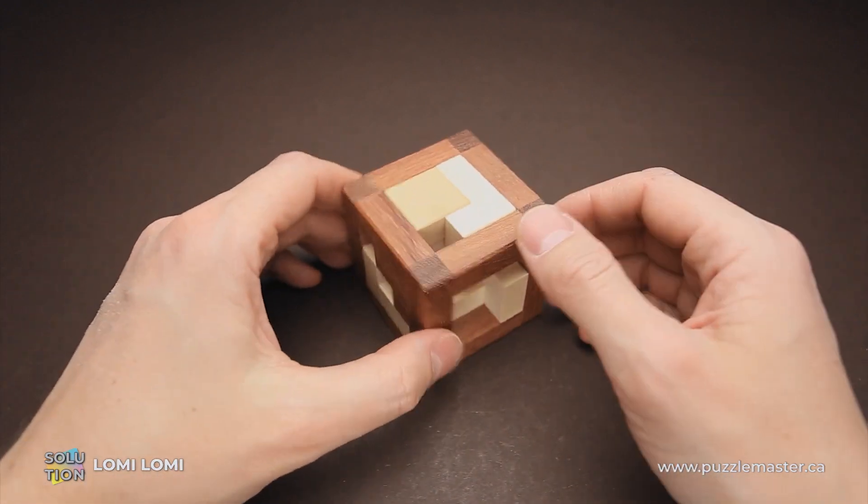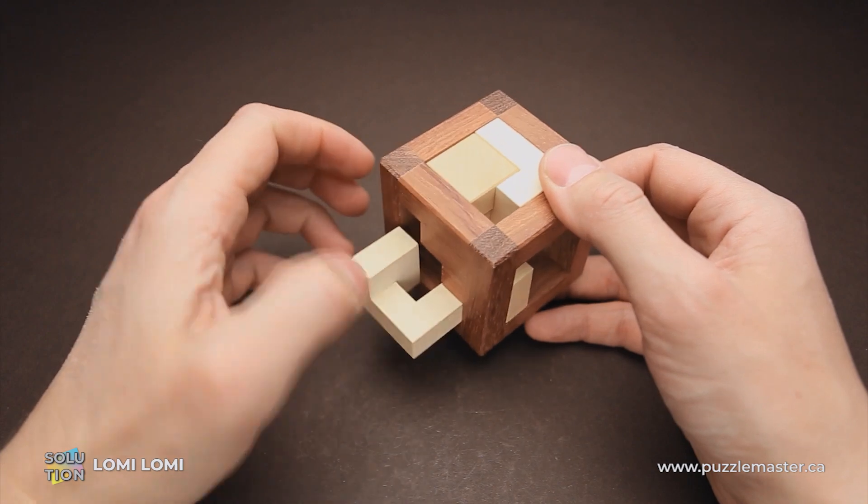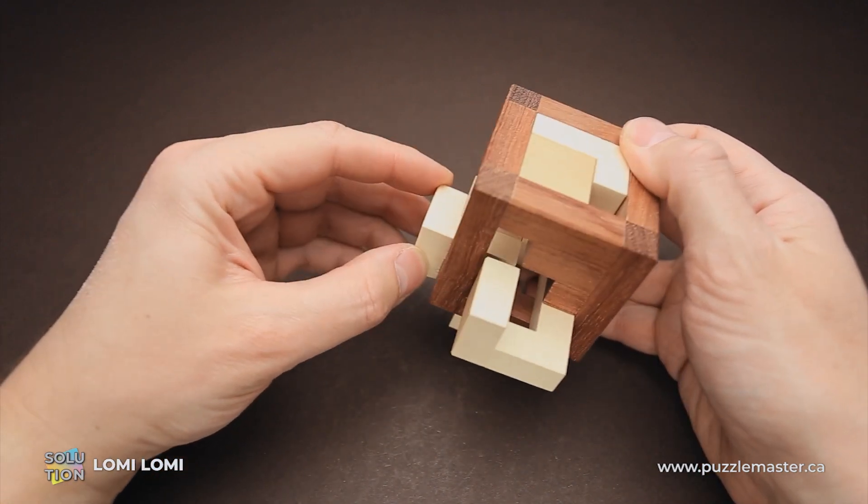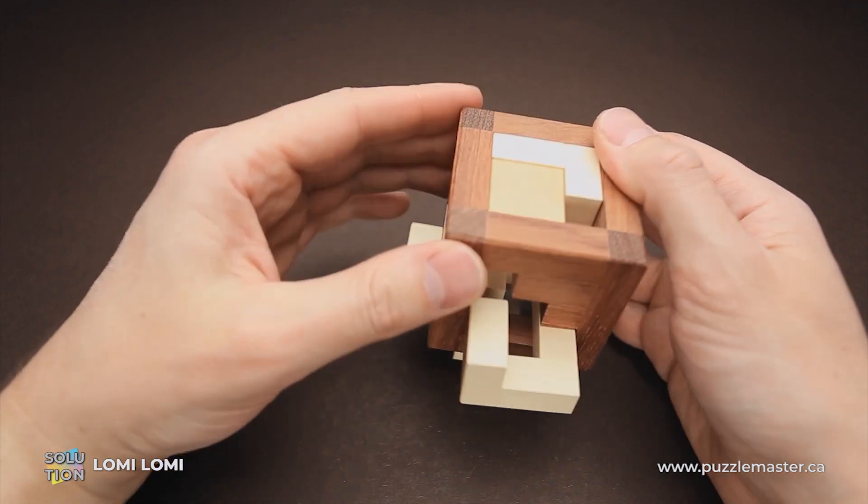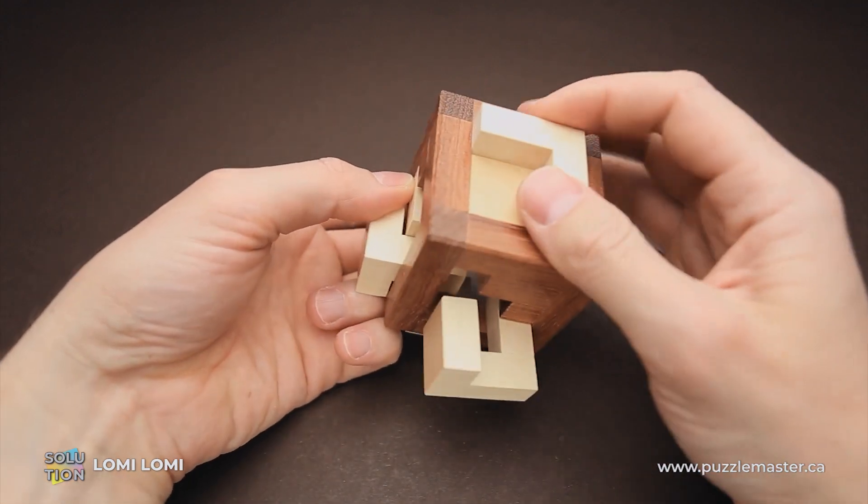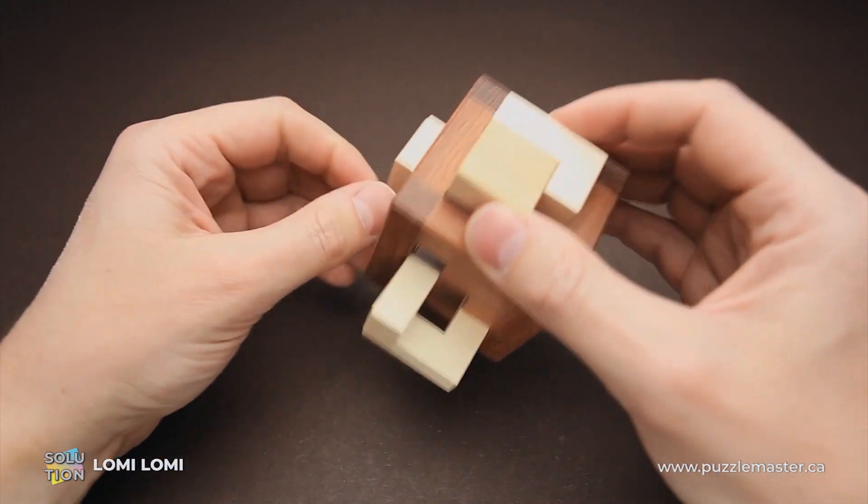To take it apart, you have to do the same steps, but backwards. You remove this piece, then you remove this piece from the back, put it down, lift these two parts up.